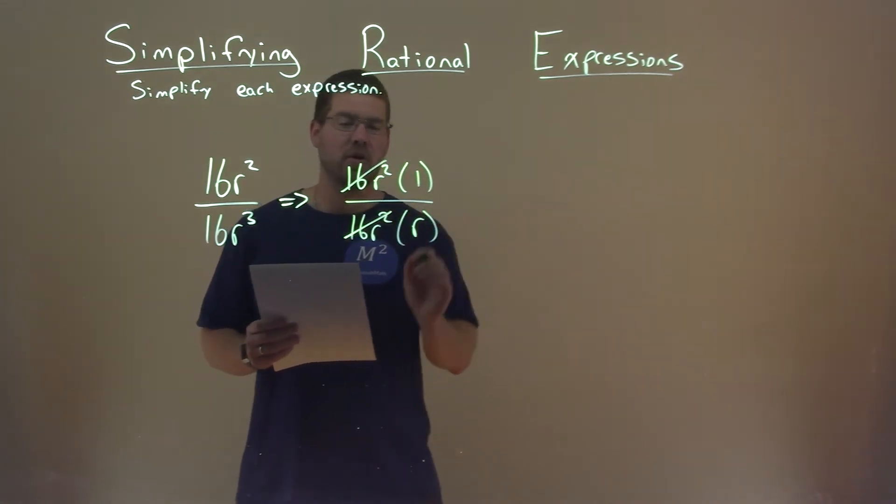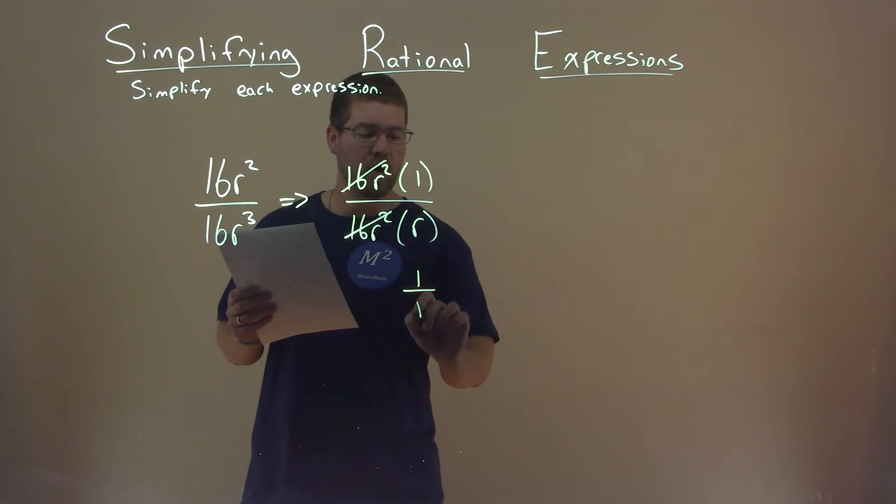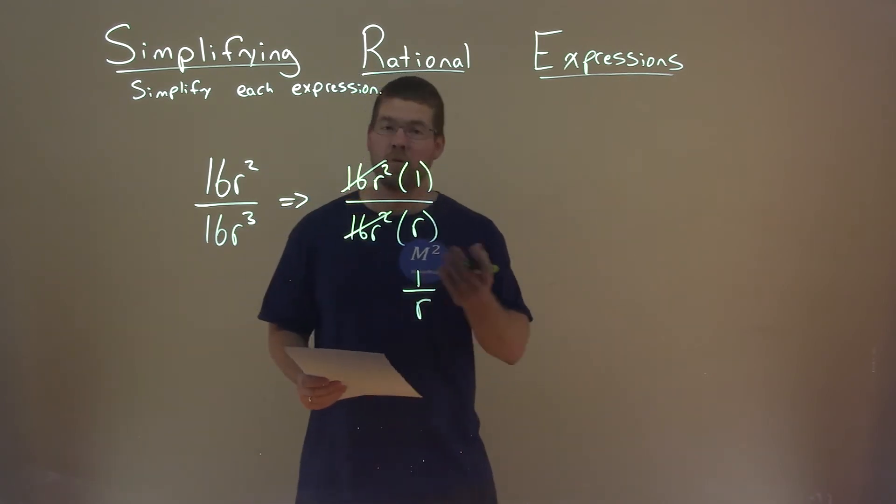Now, 16r squares are eliminated, leaving me with 1 over r, and that is our final answer.